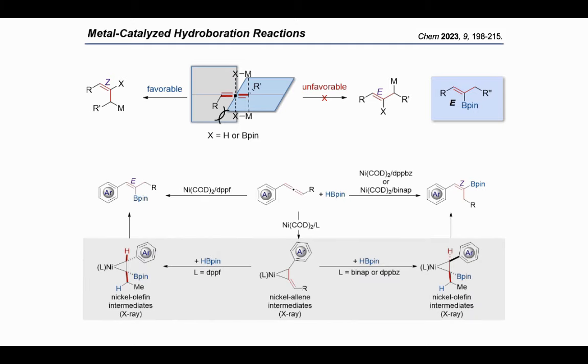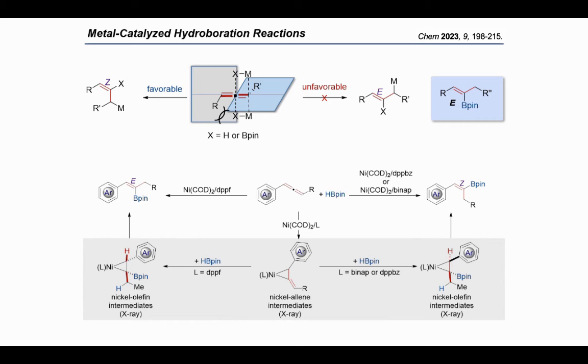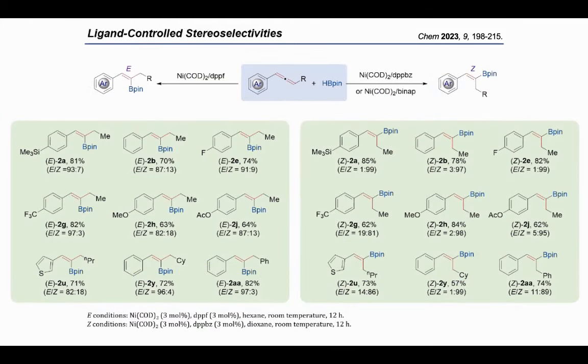In order to solve this problem, we came up with new reaction pathways: nickel-allene complex and nickel-olefin complex. Both E- and Z-selective hydroboration of internal allenes can be achieved, and the stereoselectivity can be tuned by the catalyst and ligand. Here are some selected examples of the E- and Z-selective hydroboration reactions. When we use nickel COD and DPPF, the E-selective hydroboration can be achieved smoothly with high yield and stereoselectivities, and the use of nickel DPPBZ and BINAP can give Z-selective product in good yields and stereoselectivities.